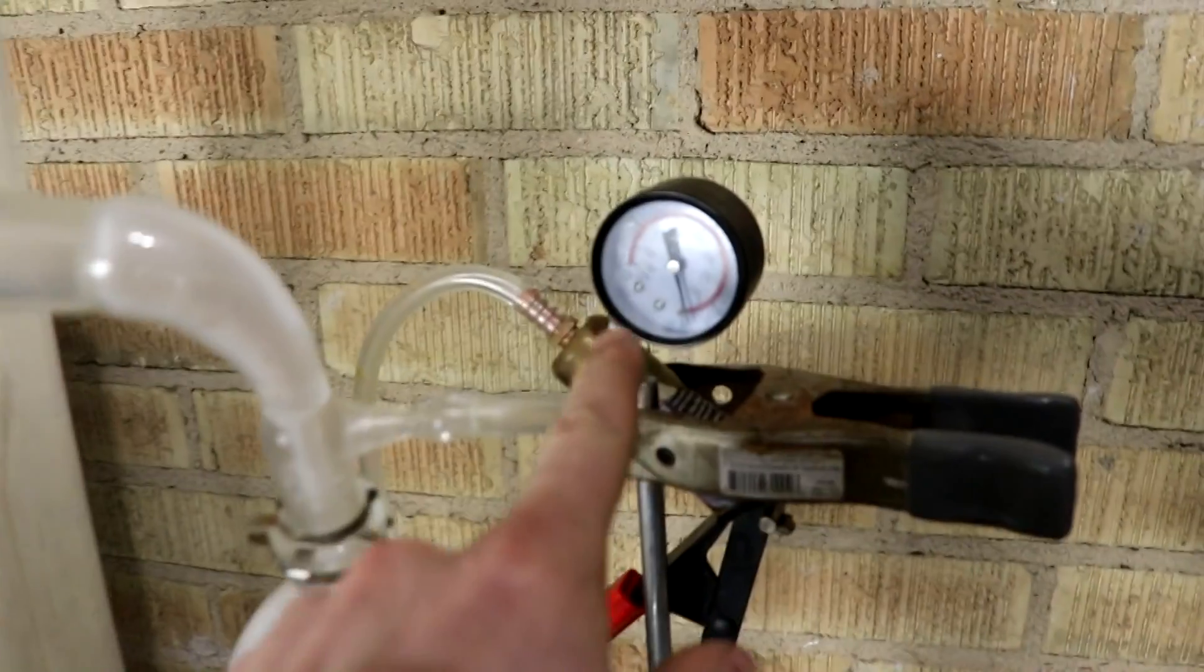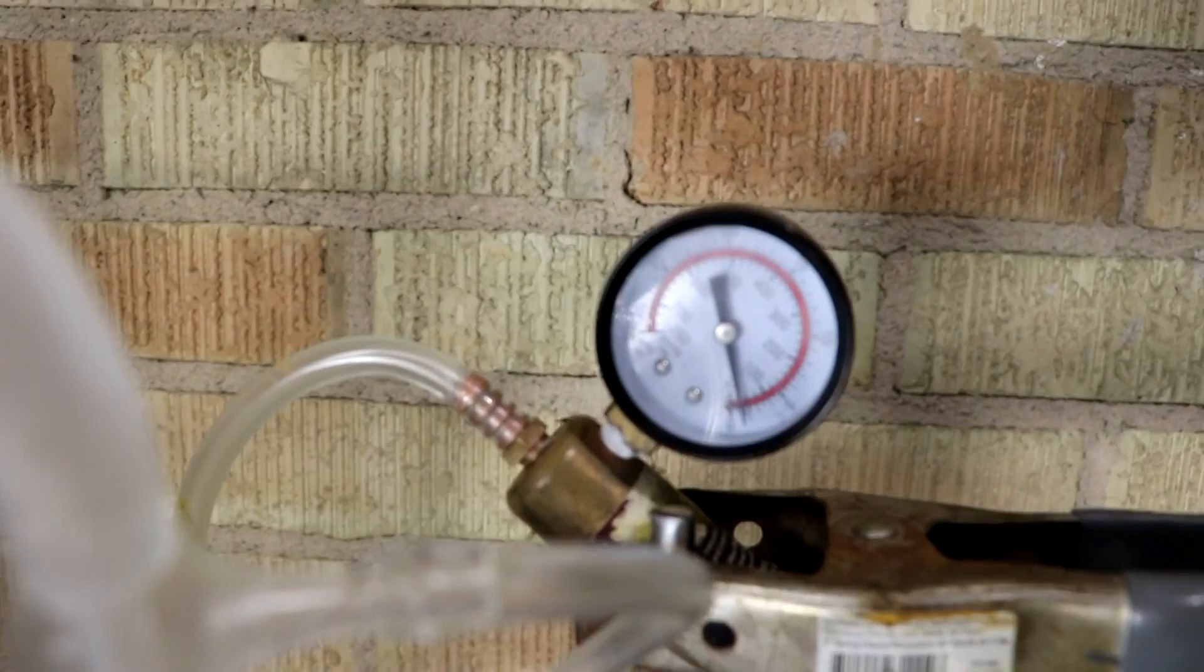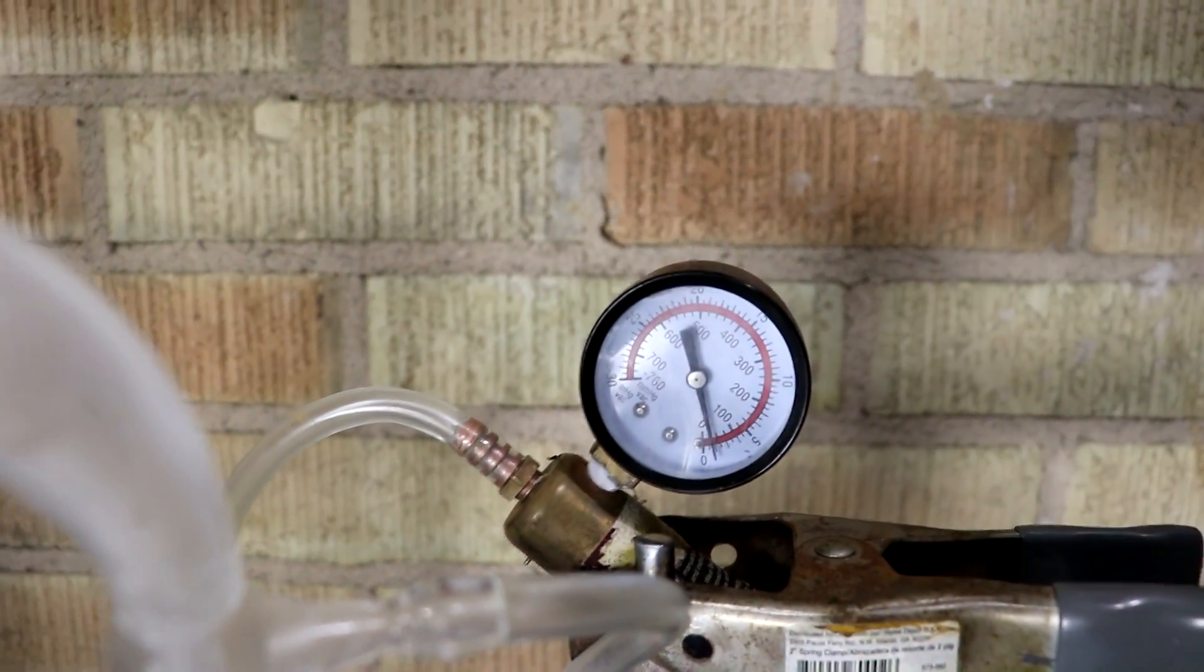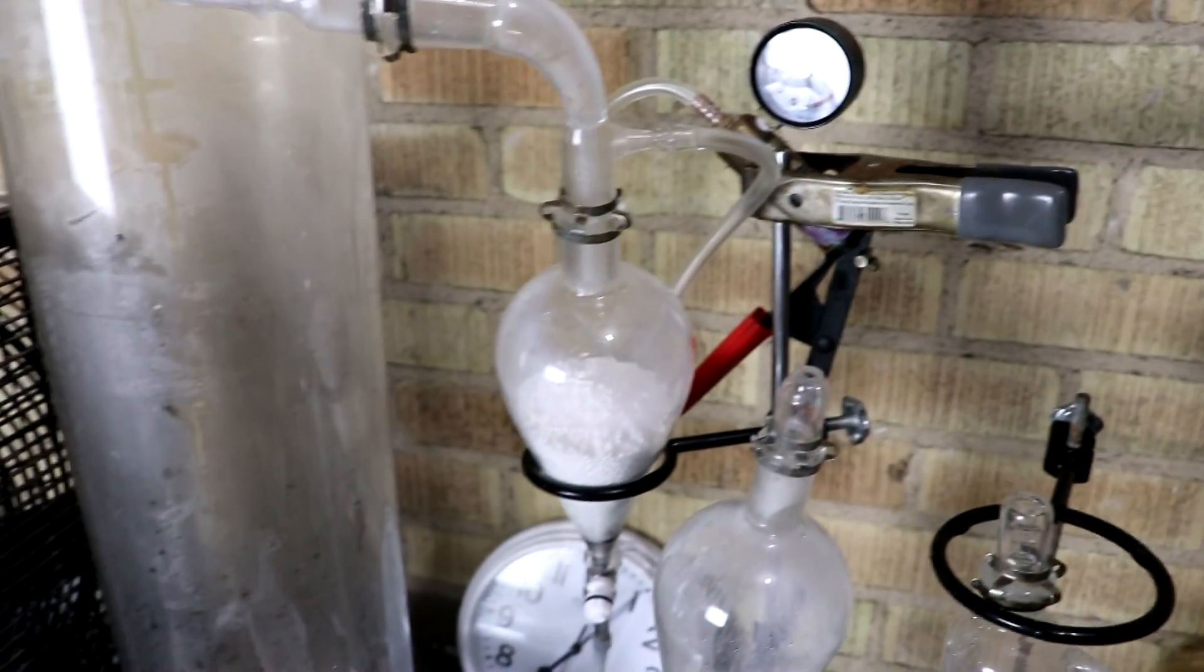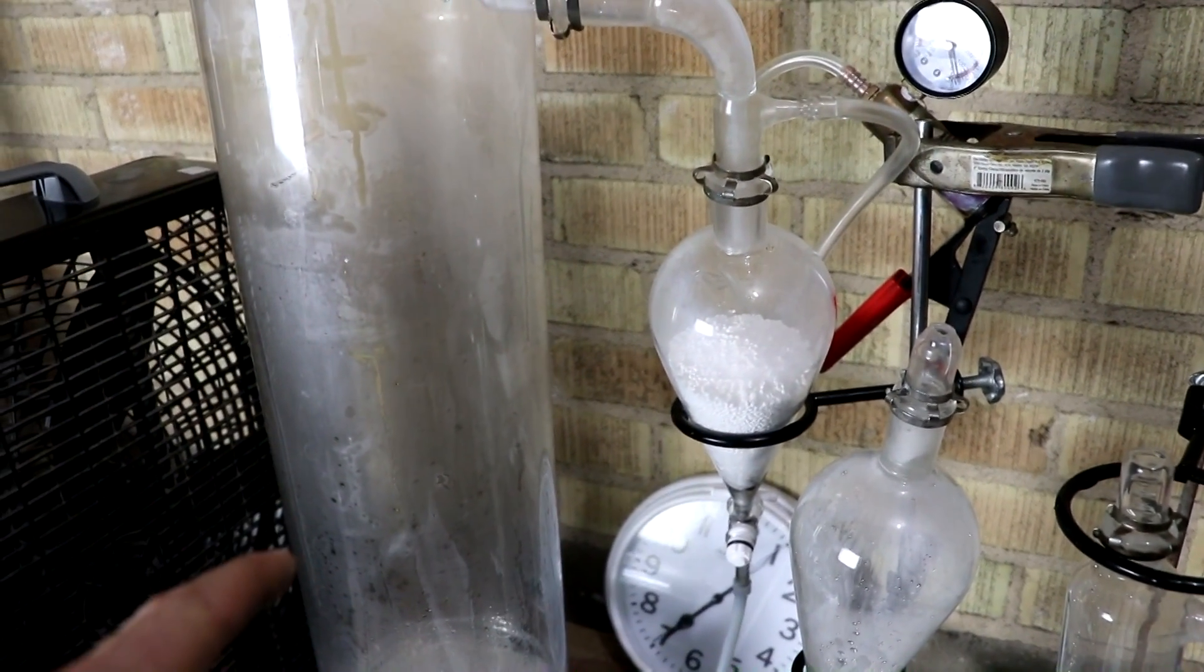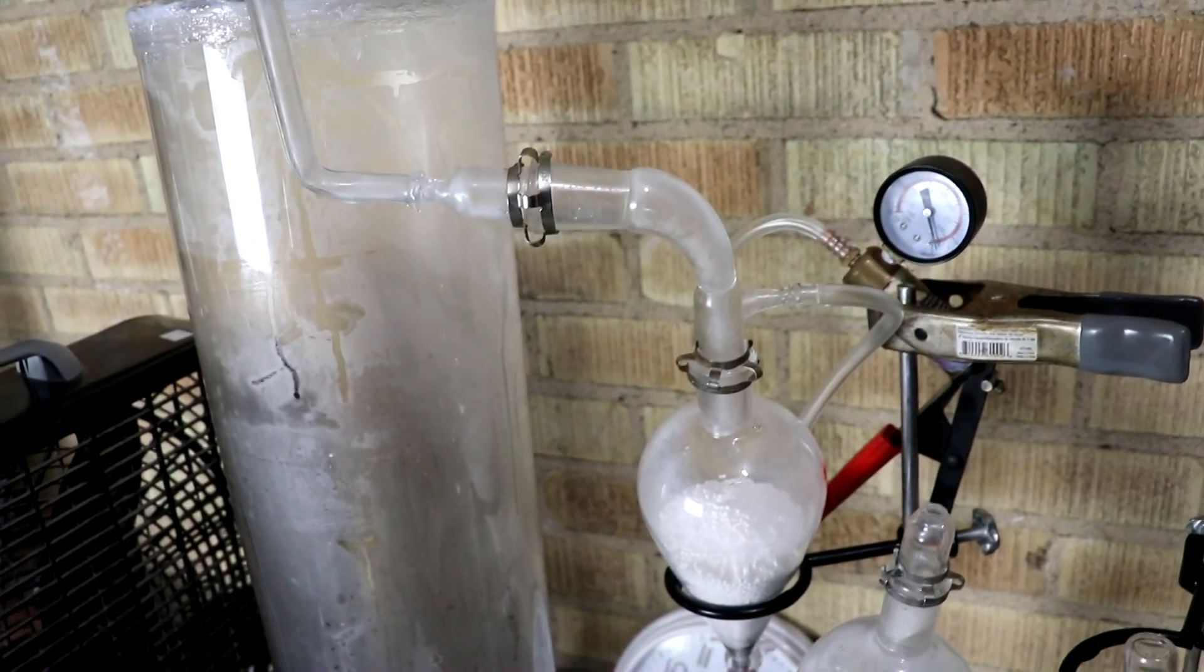This pressure gauge seems to be stuck at about one inch of mercury. You can see here. My guess is that either the reaction's not working, or air is leaking in at about the same rate as the other gases are consumed.